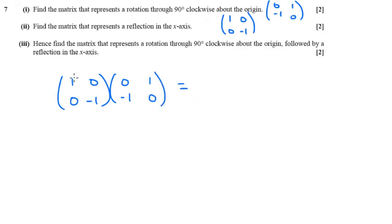So if you multiply them together, we're going to have 1 times 0, plus 0 times minus 1, which is 0. 1 times 1, plus 0 times 0, which is 1.